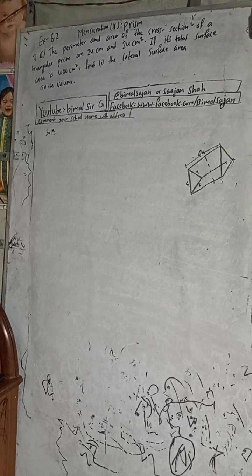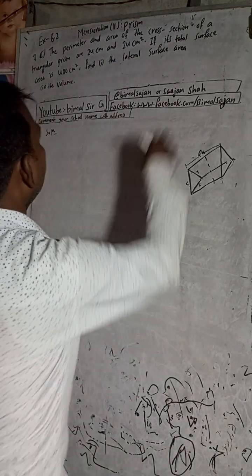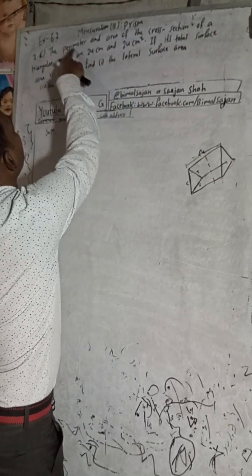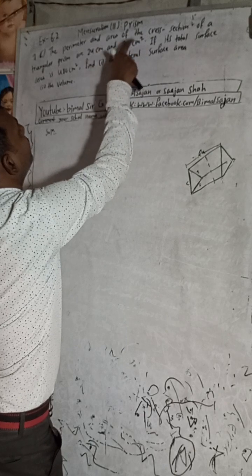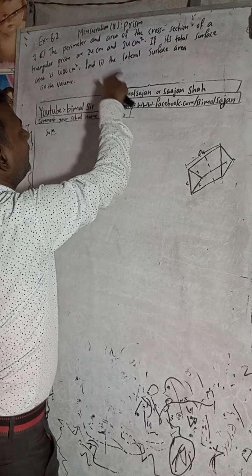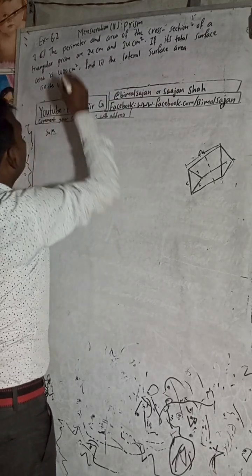Please don't be disappointed, keep patience, keep watching, keep supporting. Now I will start this solution. The perimeter and area of the cross-section of the triangular prism are 24 cm and 24 cm square. That means perimeter is 24 cm and area of cross-section is 24 cm square. If the total surface area is 480, find the lateral surface area and the volume. Here is given: perimeter.